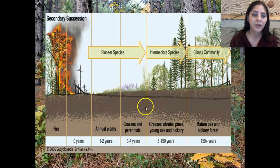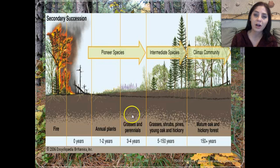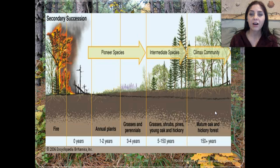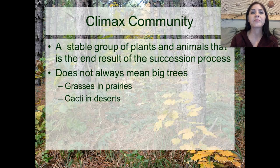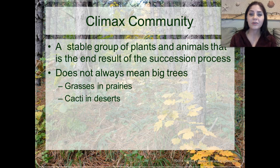So again, we have our fire, then our grasses, then our shrubs, then our smaller quicker-growing trees such as the pine trees, and our mature climax community. A climax community is a stable group of plants and animals that is the end result of the succession process.